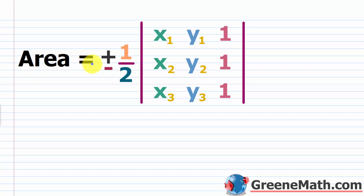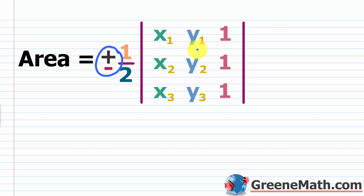The area is equal to plus or minus one-half times the determinant of this matrix. You label one of the given points as x₁, y₁, another as x₂, y₂, and the last one as x₃, y₃. It doesn't matter what gets labeled as which because we have this plus or minus. If the determinant becomes negative, multiply by negative one-half; if it's positive, multiply by positive one-half.